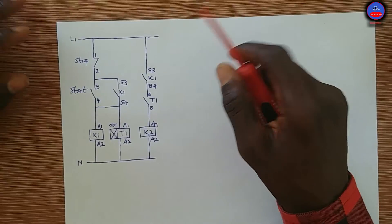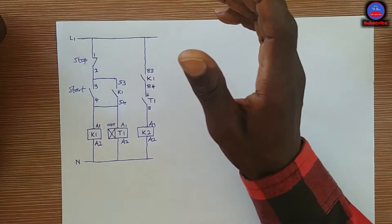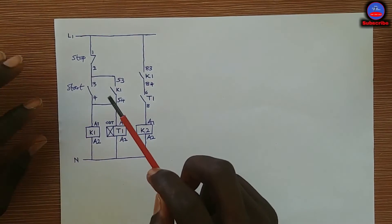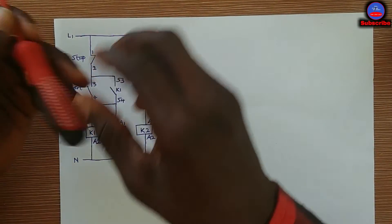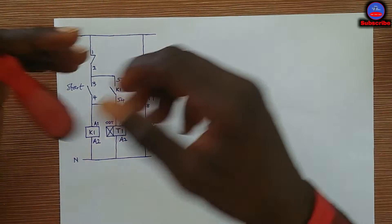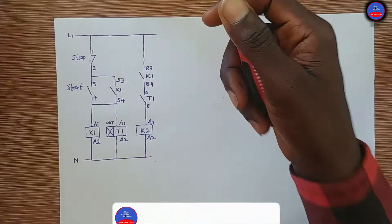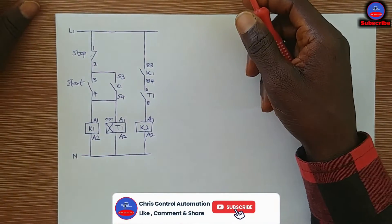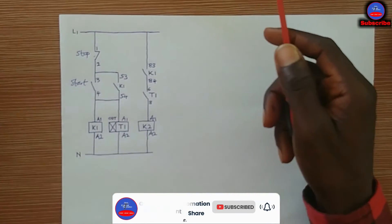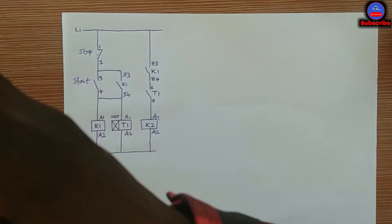Let me explain this circuit. It is an automatic sequential circuit. What that means is: when Contactor 1 (K1) energizes and is in operation, the timer will also energize and start counting. After the preset time, Contactor 2 (K2) will also come into operation and energize — so the two motors run in sequence.